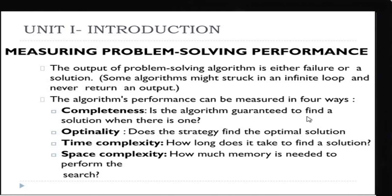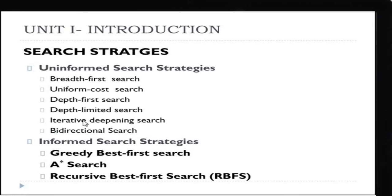Completeness means: is the algorithm guaranteed to find a solution when there is one? Optimality means: does the strategy find the optimal solution? Time complexity means: how long does it take to find the solution — how much time your algorithm will take. Space complexity means: how much memory is needed to perform the search. With these four criteria, we are going to measure the uninformed search strategies.